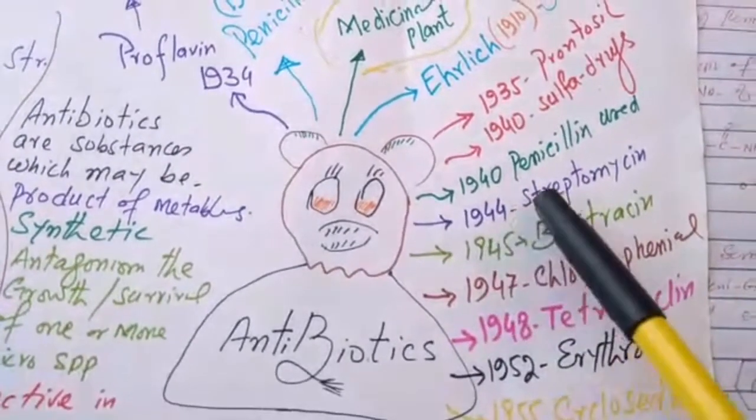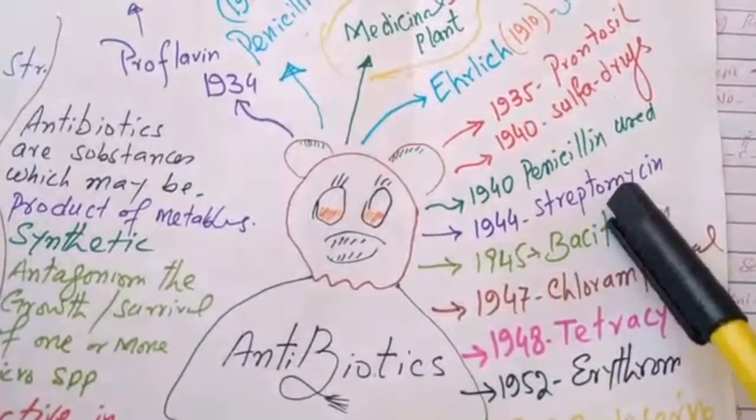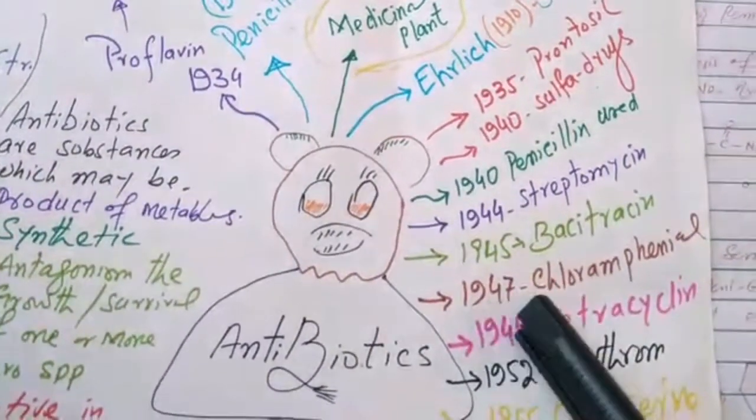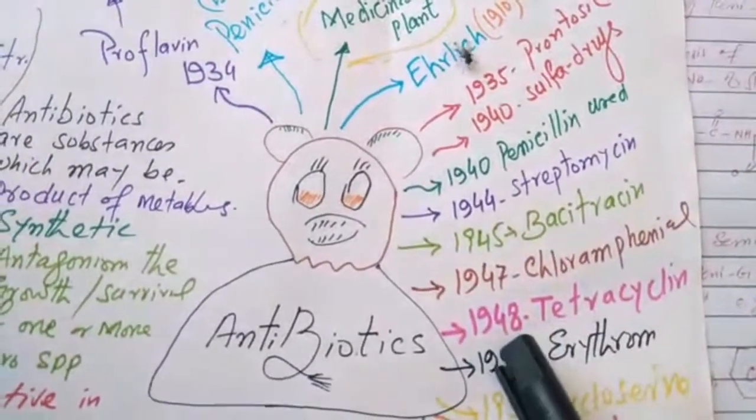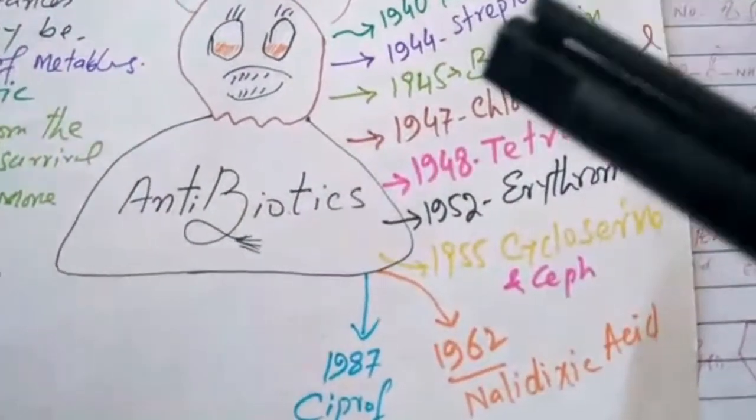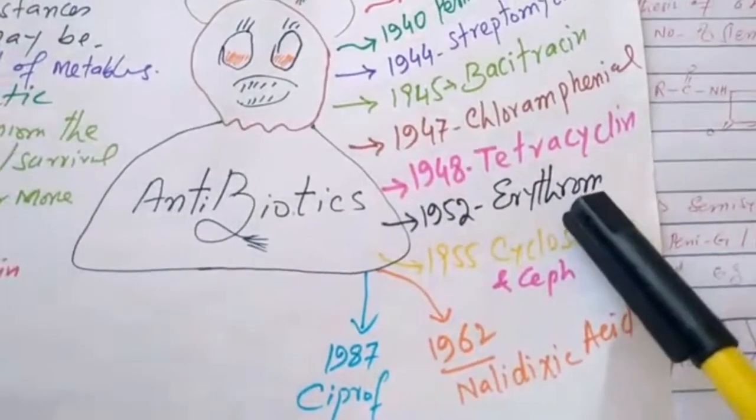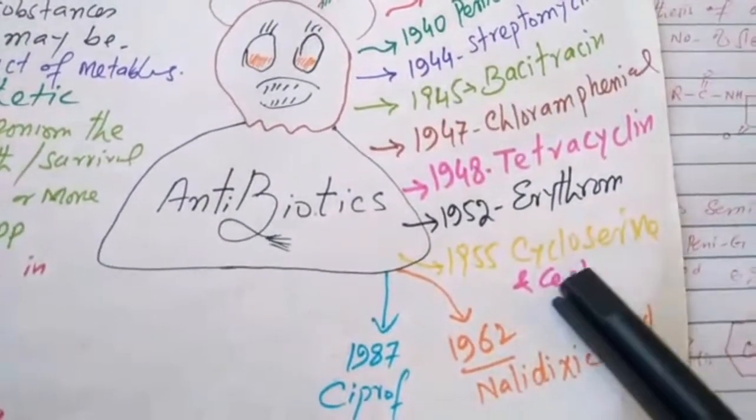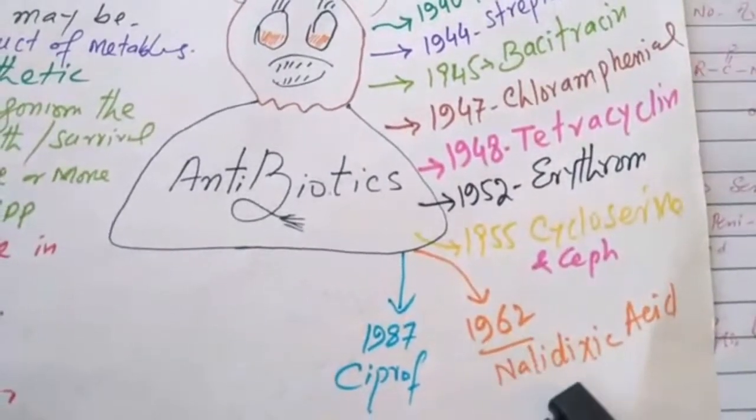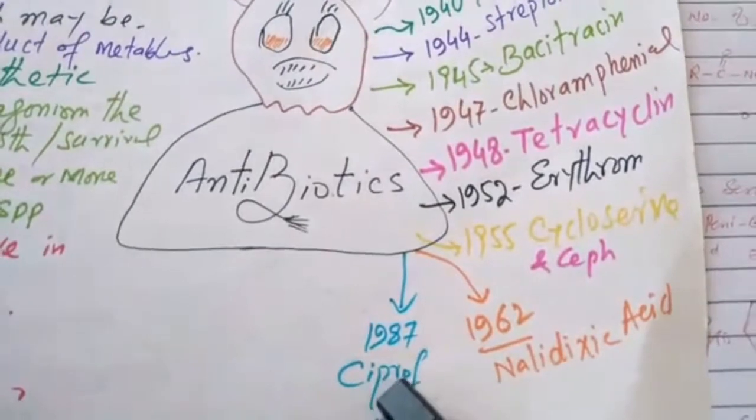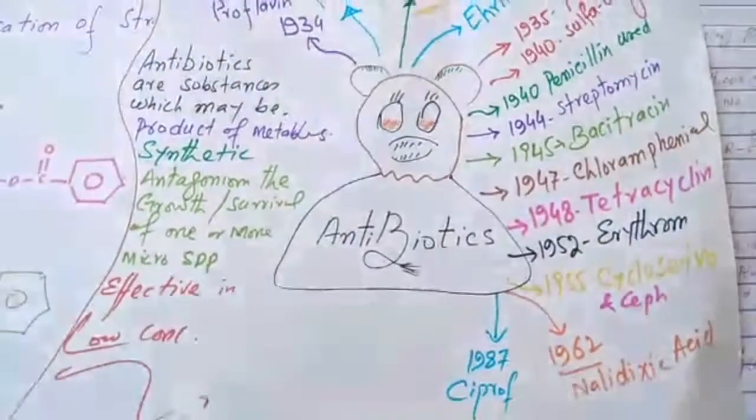In 1944, streptomycin. 1945, bacitracin. 1947, chloramphenicol. 1948, tetracycline. 1952, erythromycin, which is a prototype drug of macrolides. 1955, cycloserine and cephalosporin. 1962, nalidixic acid. And 1987, ciprofloxacin. Thank you for listening.